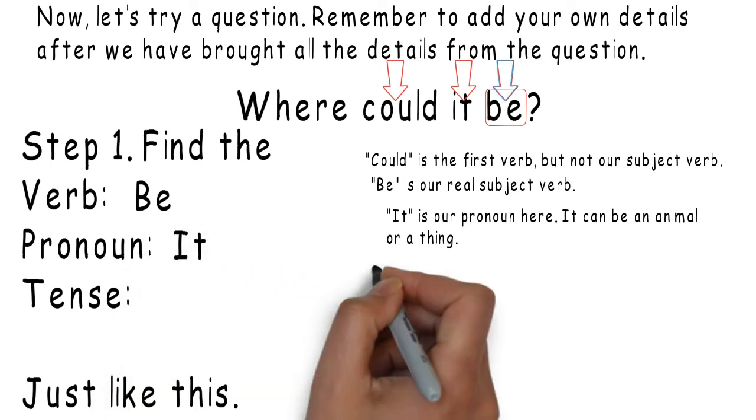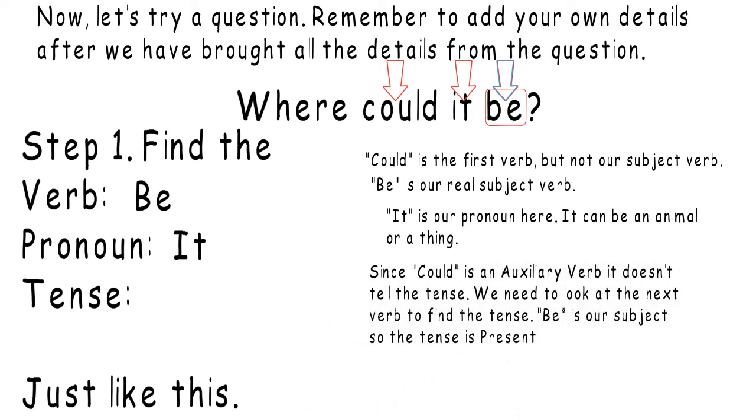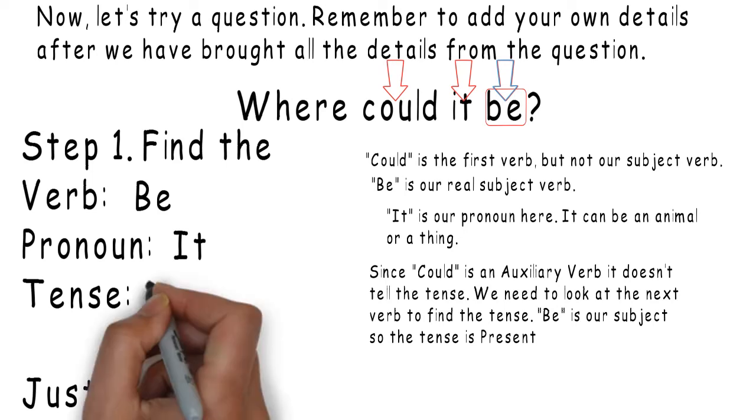Since could is an auxiliary verb, it doesn't tell the tense. We need to look at the next verb to find the tense. Be is our subject, so the tense is present.